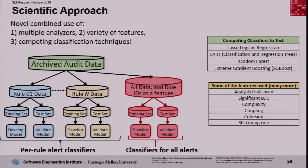The way we developed and tested the classifiers is shown in this diagram. Starting from the top, we have archived audit data. For the left side, we created per-rule alert classifiers. To do that, we split the alerts into sets of CERT coding rules that they map to, and then we further split that into a training set that we developed the classifier models from, and a test set that we validated the models on.